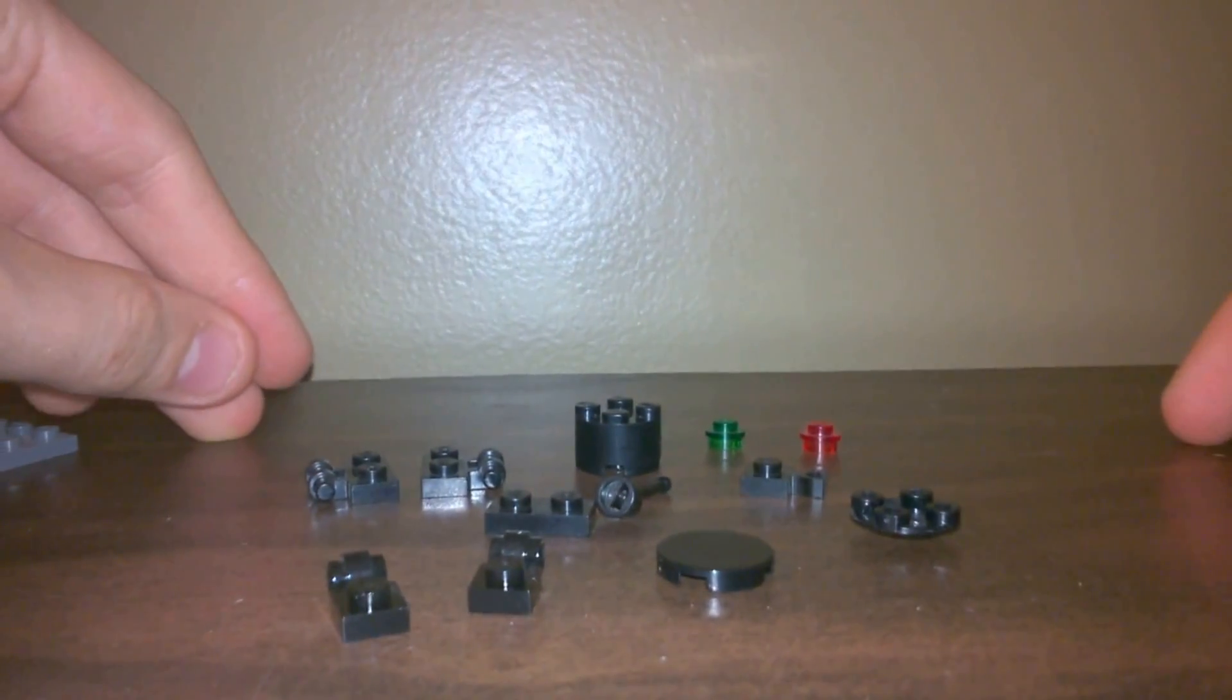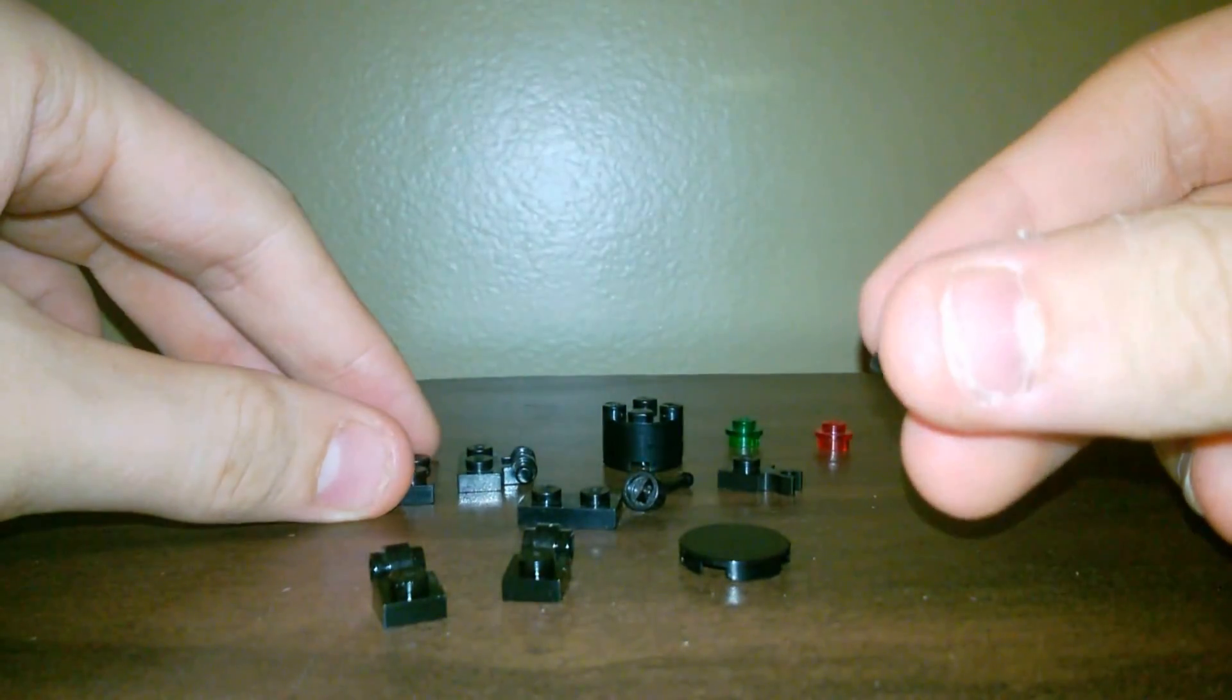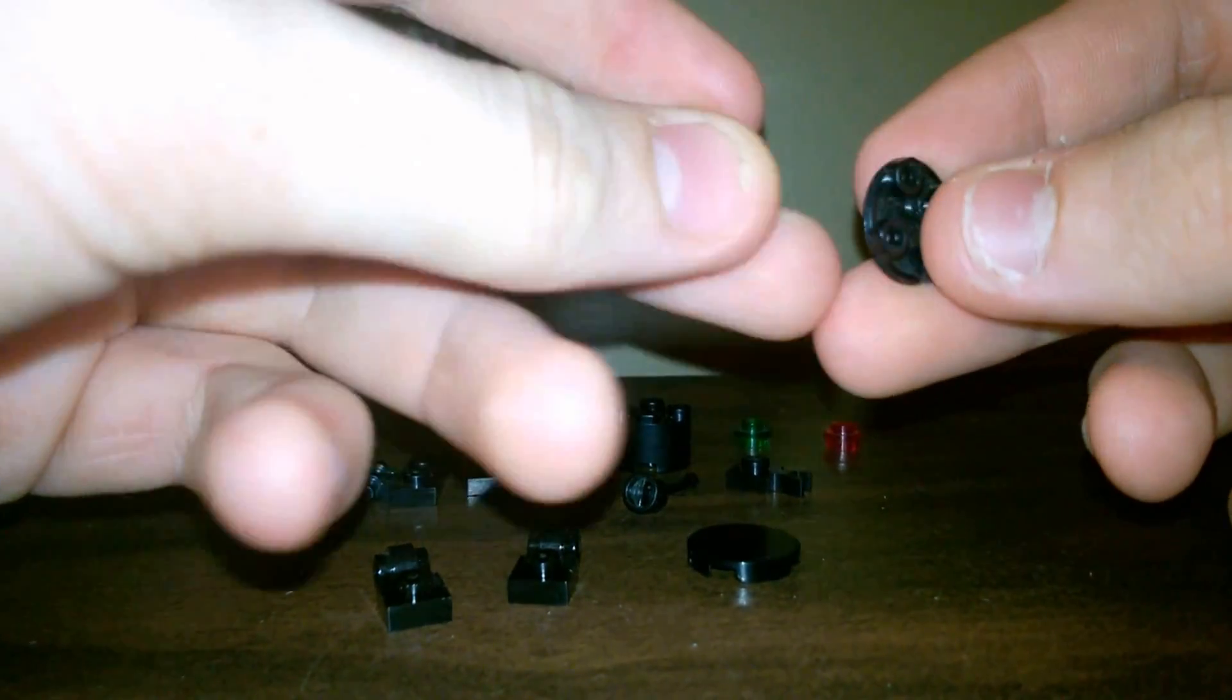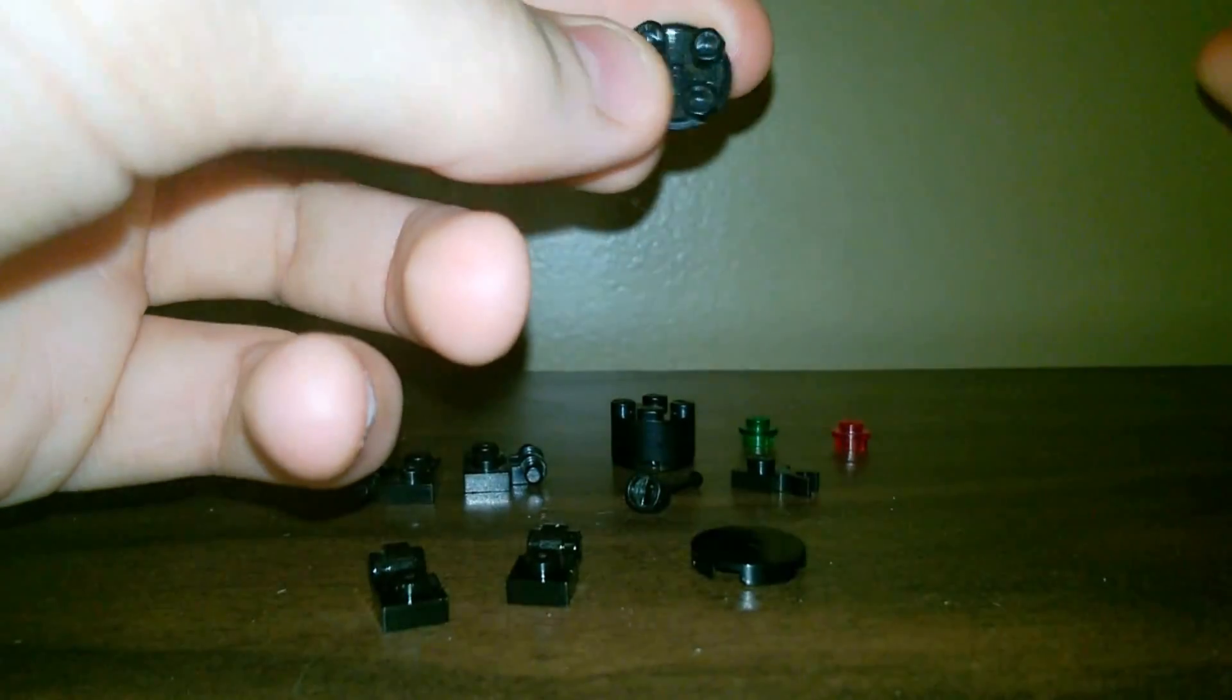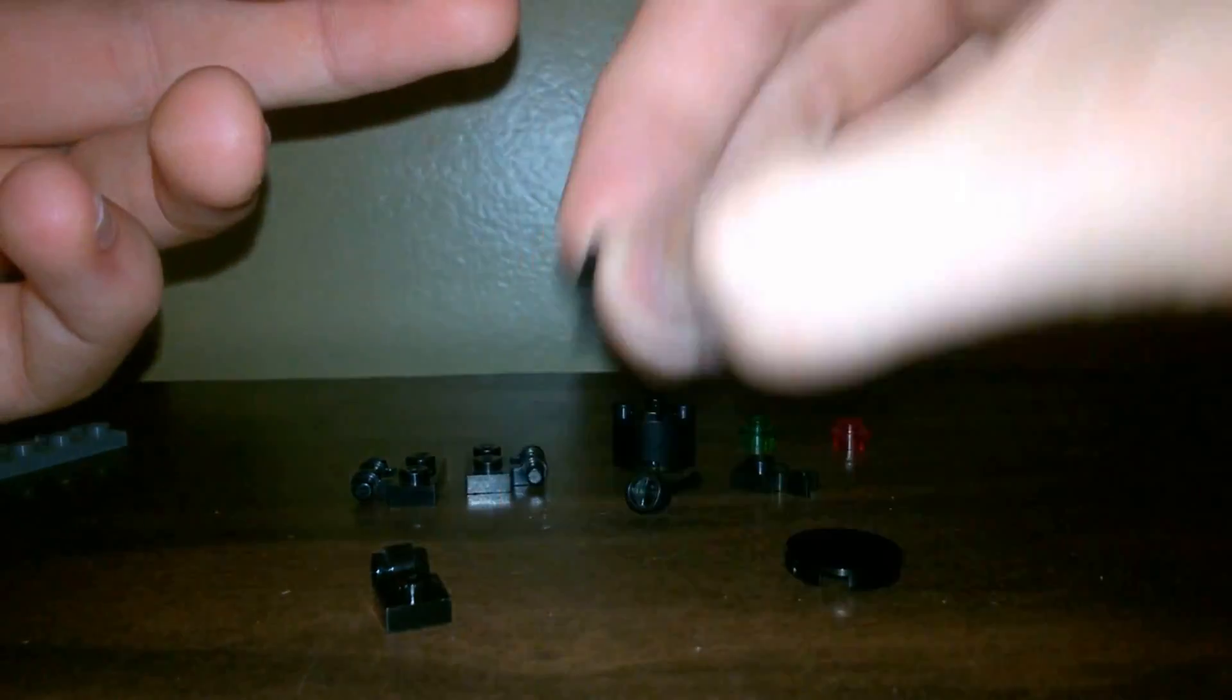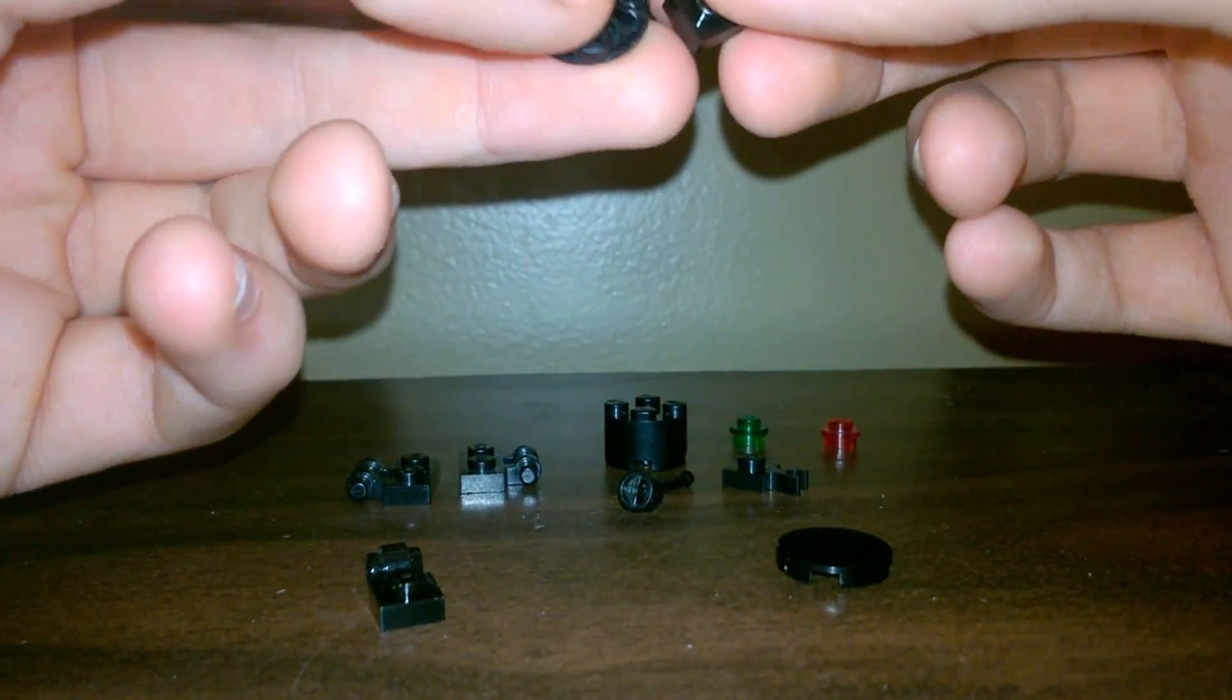Let's start with the bottom. We're going to need this inverted slope piece and now we need to get a 1x2 plate. I built a black one because, well, it's not that one cost-wise.